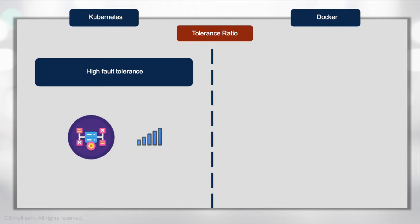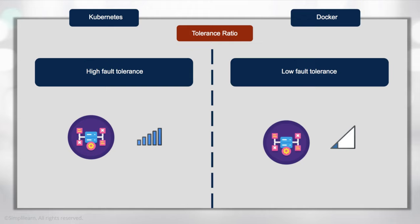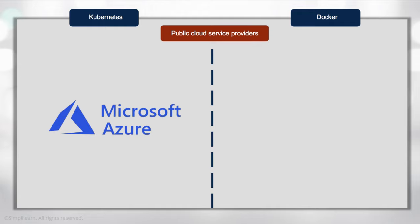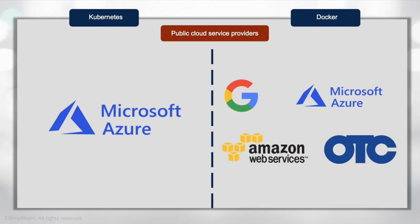Fault tolerance within Kubernetes is very high by design — its architecture is built on the same architecture Google uses for managing its entire cloud infrastructure. Docker has lower fault tolerance, but that's because it's just managing the services within its own containers. Most public cloud providers support both Kubernetes and Docker. Microsoft Azure was very quick to support Kubernetes, and today Google, Amazon, and many other providers offer first-level support for it — it's become extremely popular in a very short time frame.